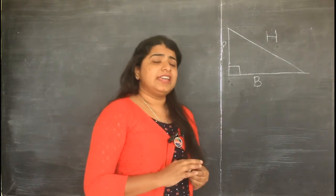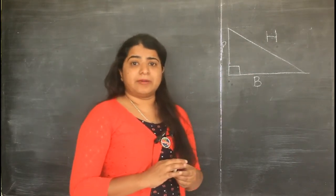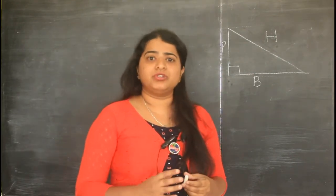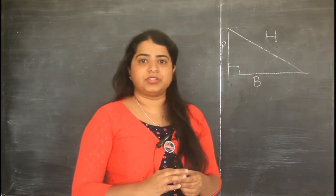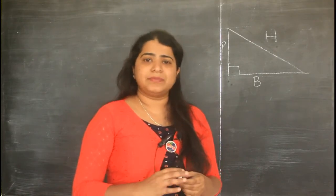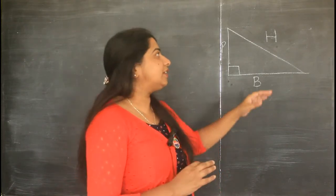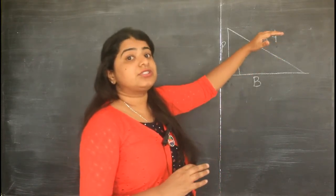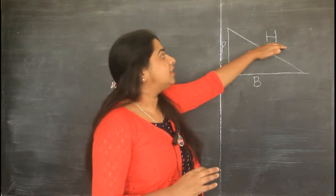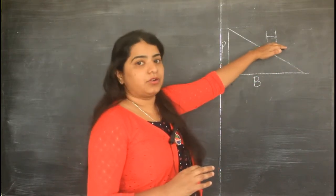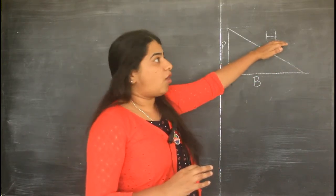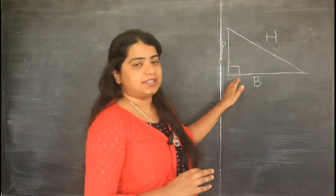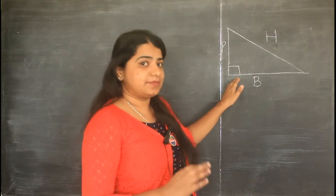Now, if I give you a sum and I do not mark the 90 degrees, how do you know which is the hypotenuse? Simple — it is the longest side. Take the biggest number and put it on the hypotenuse. Opposite to it will be the 90 degrees. Simple as that.